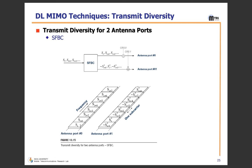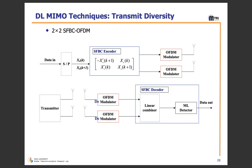Continuing the SFBC description: when antenna port 0 is carrying subcarrier S_i, antenna port 1 carries the conjugate of S_{i+1}. At the next subcarrier, antenna port 0 carries S_{i+1} while antenna port 1 carries the conjugate of S_i. This way both antennas mitigate correlation. In the 2×2 SFBC block diagram: data comes in, is converted from serial to parallel, and given to the SFBC encoder. The encoder assigns the data component to the first part and the conjugate of the next symbol to the same row, and vice versa for the second row.